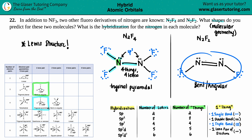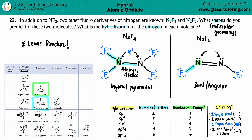Now let's do N2F2. Just like before, if I cut this down the middle these nitrogens are identical, so they have the same hybridization. Looking at one nitrogen: it has a single bond - that's one thing; a double bond, which even though it has two lines is still classified as one thing; and a lone pair - that's three total things. Three things means three letters, which is SP2. That's the hybridization of each nitrogen in N2F2. So they have different shapes and different hybridizations.